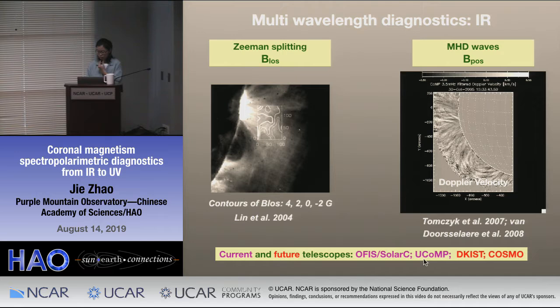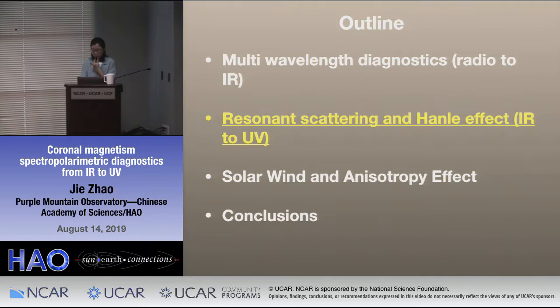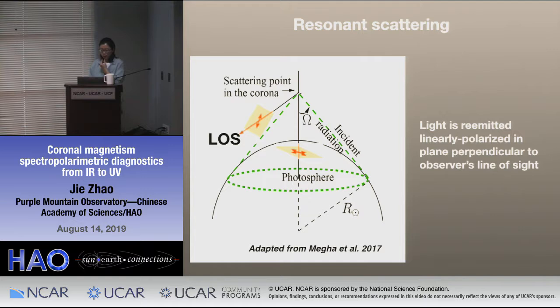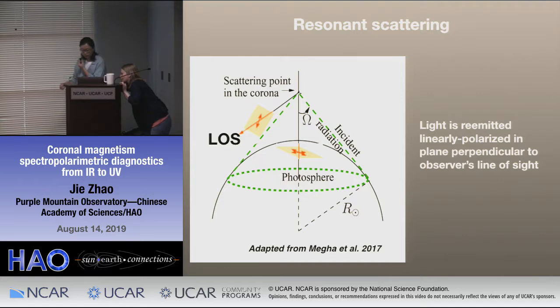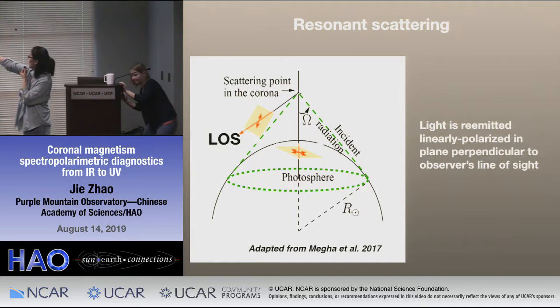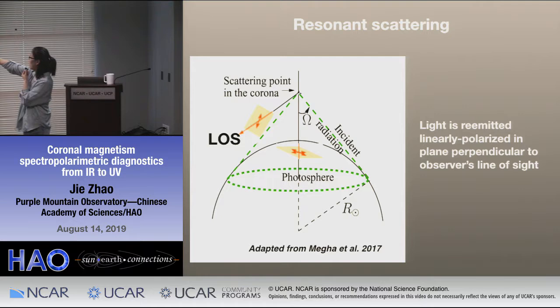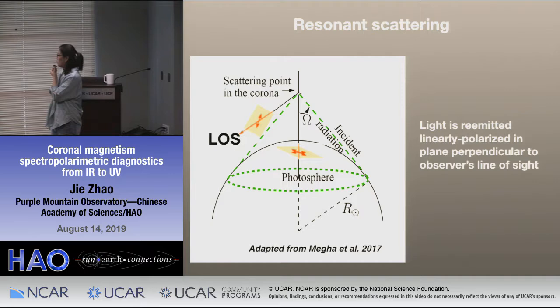Now I will talk about the resonance scattering and the Hanle effect in infrared and ultraviolet. Coronal ions can scatter the incident radiation from the lower solar atmosphere and produce linearly polarized light on the plane perpendicular to the line of sight. In the following study, we assume the incident radiation is unpolarized and cylindrically symmetric. We also assume the coronal ions are two-level atoms with an unpolarized lower level.